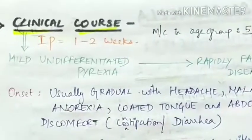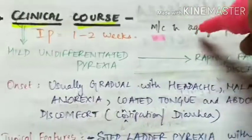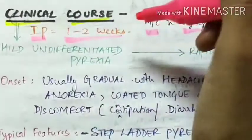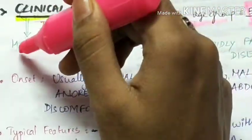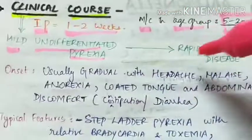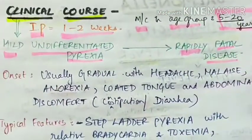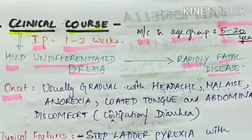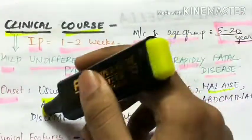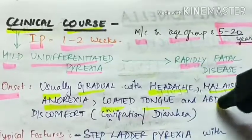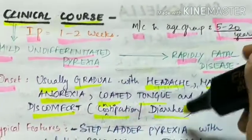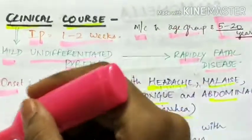Coming to the clinical course: enteric fever is most common in the age group of 5 to 20 years. Its incubation period is 1 to 2 weeks, and the clinical course varies from mild undifferentiated pyrexia to rapidly fatal disease. Onset of symptoms is usually gradual with headache, malaise, anorexia, coated tongue, and abdominal discomfort, which can be either constipation or diarrhea.